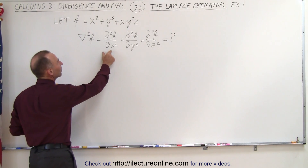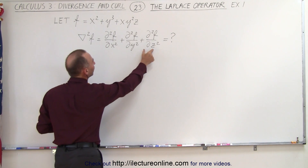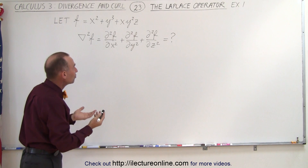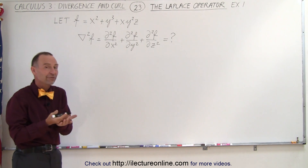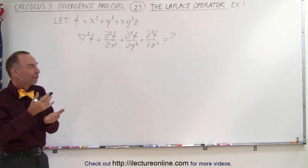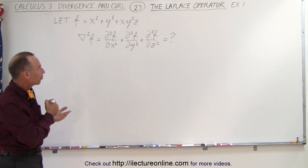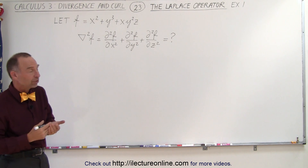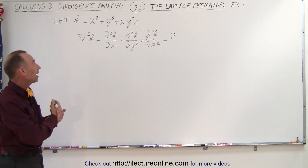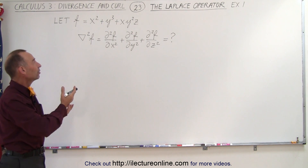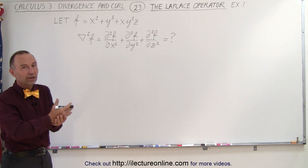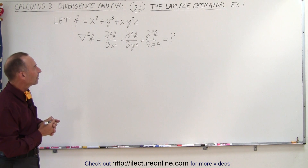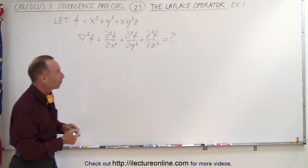Each term here operates on the entire function, which means we first need to find the first partial derivative with respect to x, y, and z of the function. And then we have to find the second derivative with respect to x, y, and z of the entire function.